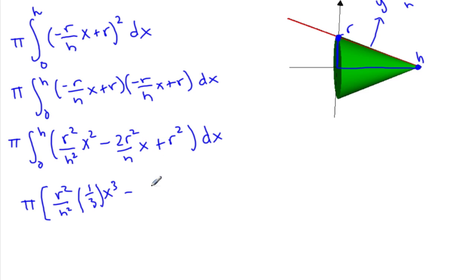The integral of x is 1/2 x², so that half and two cancel. So that's r²/h times x², plus the integral of r² is just r²x, evaluated from 0 to h.